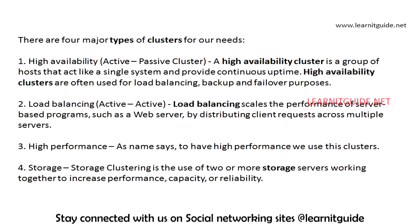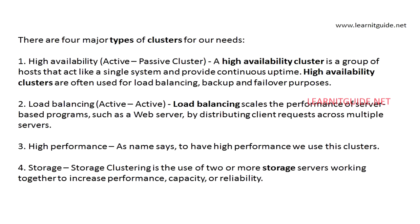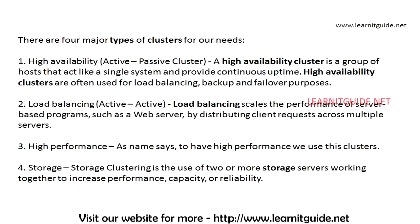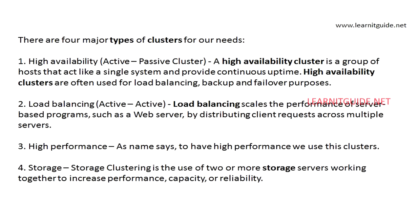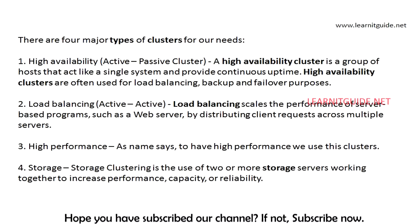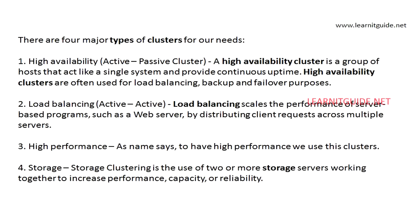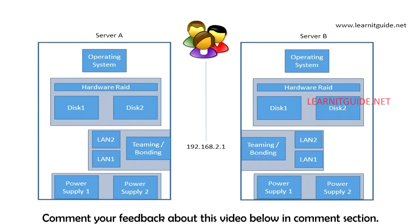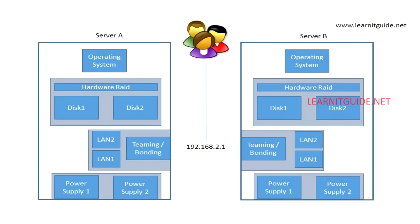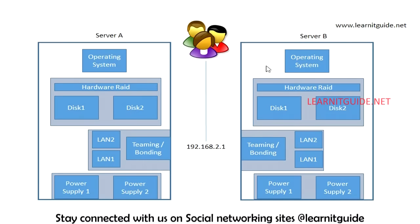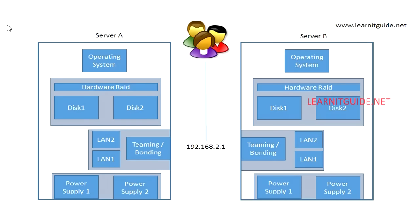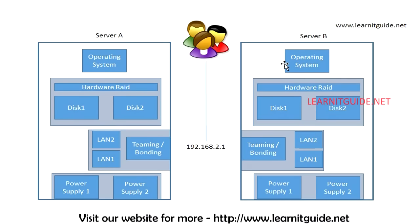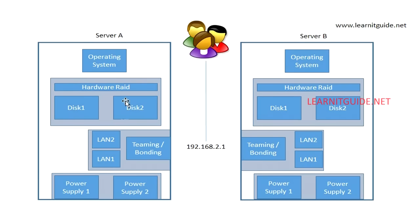A high availability cluster is a group of hosts that act as a single system and provide continuous uptime. High availability clusters are often used for load balancing, backup, and failure purposes, and are one of the most commonly used clusters across various sectors. In a two-node high availability cluster, one node is active and one is passive.